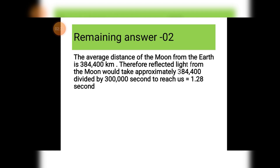For the second part — how long does reflected light from the moon take to reach us — the average distance of the moon from the Earth is 384,400 km. To find time, we divide distance by speed. Therefore, reflected light from the moon would take approximately 384,400 divided by 300,000 seconds to reach us, which equals 1.28 seconds.